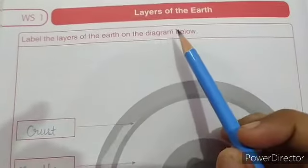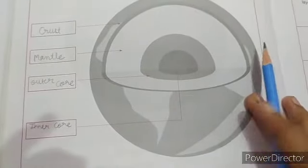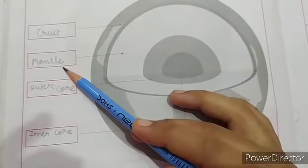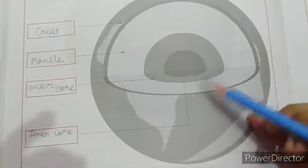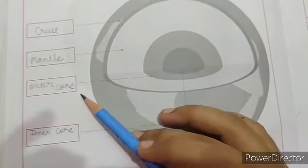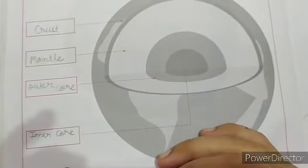Worksheet 1: layer of the earth. This is the diagram of layer of the earth. Outermost layer of the earth is crust. Second layer of the earth is mantle. Third layer is outer core. And innermost layer is inner core.